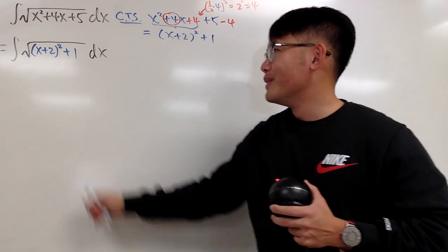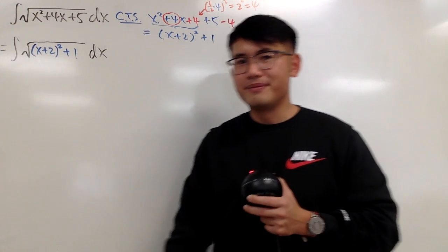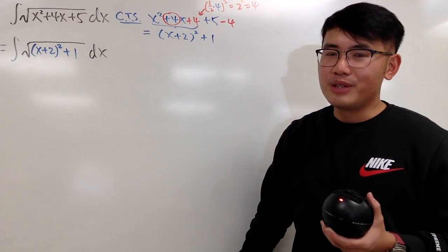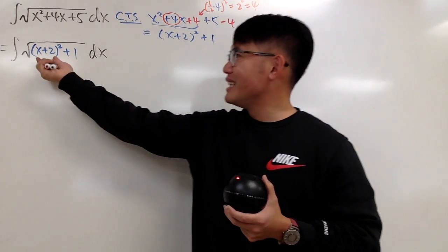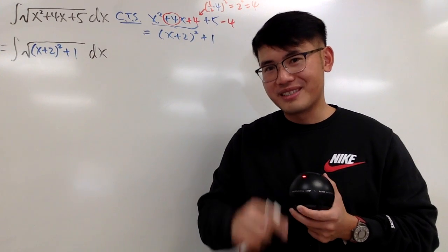However, we have to remember, x plus 2 square, hmm, you have two ways to do it. First, you can just do, you can just let this right here to be the, what do we need? Yes, tangent.